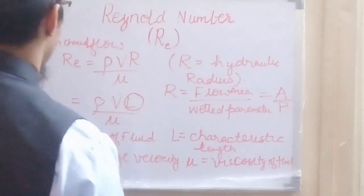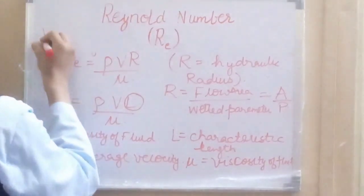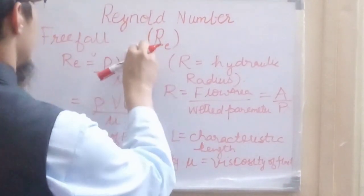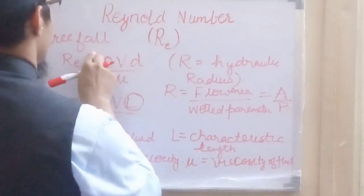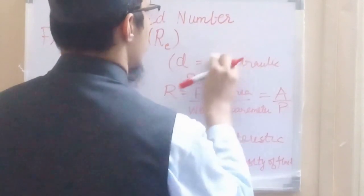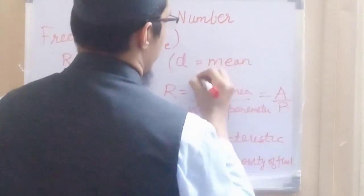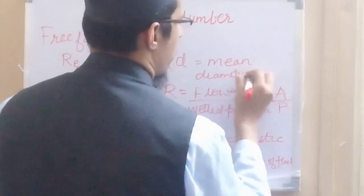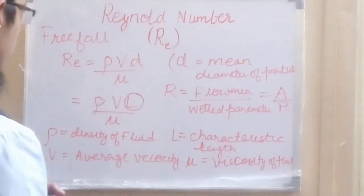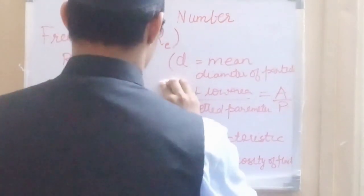Similarly, the characteristic length changes to the diameter of particle in the case of free fall. If a particle is freely falling in a liquid, the Reynolds number will be equal to rho·v·d divided by mu, where d is the mean diameter of the falling particle. In this way the mathematical formulation for Reynolds number changes from one flow type to another.